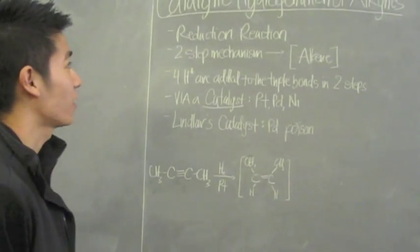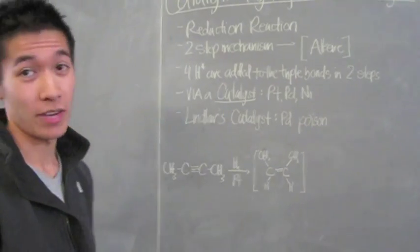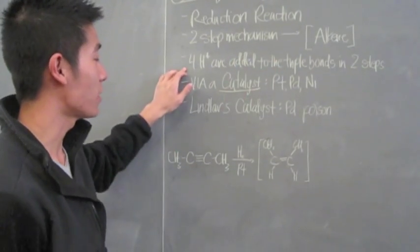And this is catalytic hydrogenation of alkynes. It's essentially like an alkene in that it's a reduction reaction, but unlike alkenes, it's a two-step mechanism that forms an alkene as an intermediate.